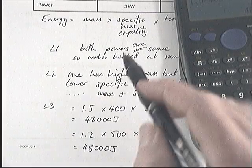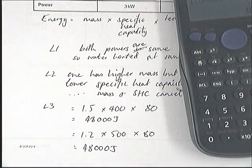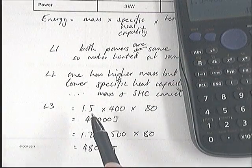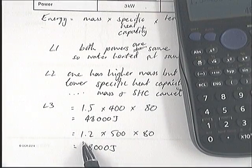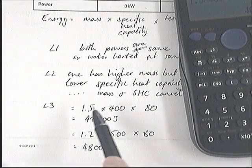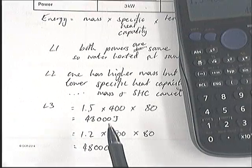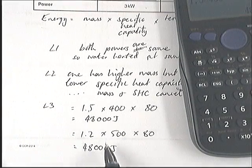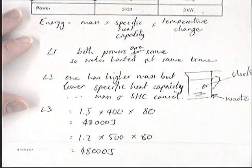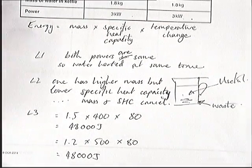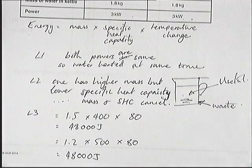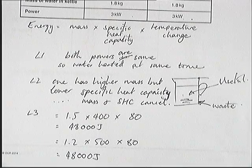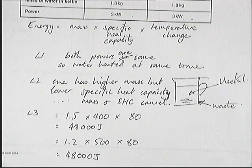They're both heating up the same mass of water, so that's okay. One's got a higher specific heat capacity but a lower mass; the other one's got a higher specific heat capacity. Therefore, both the energy used to heat the kettle — which we don't want, which takes up extra time — are the same. Therefore, the time is the same.